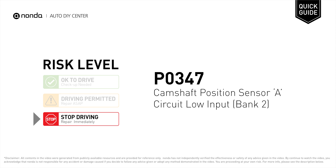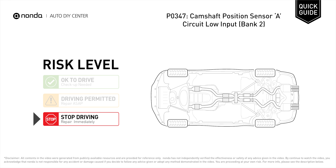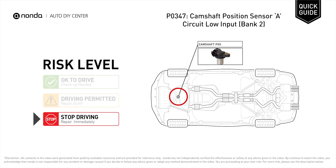P0-347 is a diagnostic trouble code for camshaft position sensor A circuit low input at bank 2. Under this circumstance, stop driving and repair your vehicle immediately. P0-347 means that the engine control module detected the engine camshaft position sensor circuit is not within specifications.